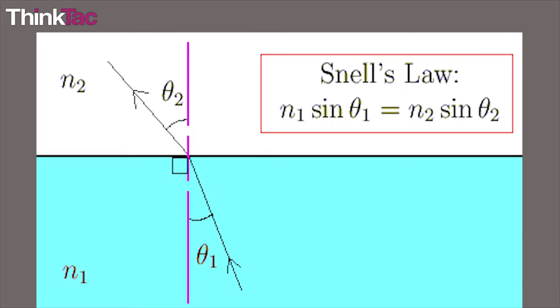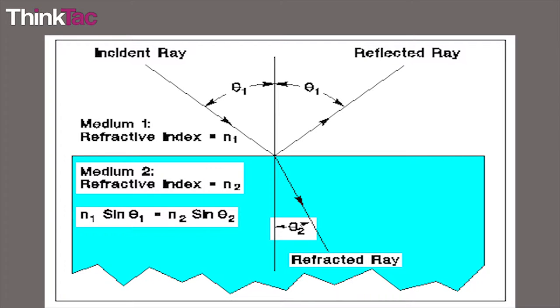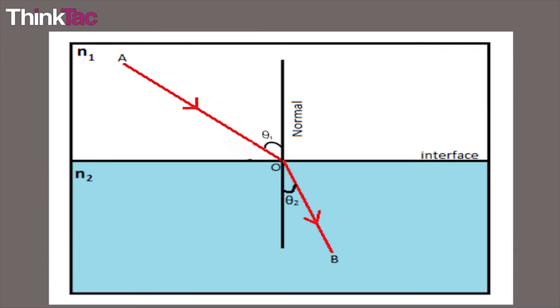Snell's law of refraction is stated as n1 sin theta1 equals n2 sin theta2, where n1 is the refractive index of medium 1, n2 is the refractive index of medium 2, theta1 is the angle of incidence and theta2 the angle of refraction.